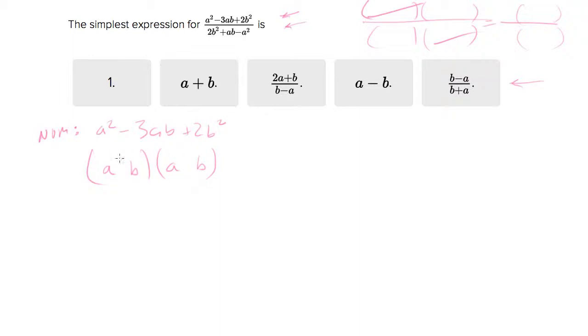And they need to, the a terms need to multiply to give you, the b terms must multiply to give you the center. So basically what you're missing here is the sign and the coefficient on the b term. That's what we're really hunting for.